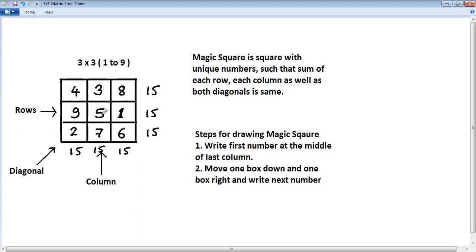4 plus 5, 9 plus 6, 15. 2 plus 5, 7 plus 8, 15. So you can see that all totals are 15. All totals are same. And that's why this magic square.